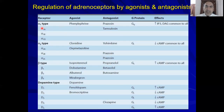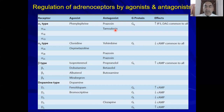Now let's discuss the regulation of these receptors by agonists and antagonists. For alpha-1: the agonist is phenylephrine and the antagonist is prazosin. There is also a selective alpha-1A antagonist commonly used for symptomatic treatment of benign prostatic hyperplasia (BPH). All alpha-1 receptors are GQ protein-coupled receptors. Activation of GQ activates the enzyme phospholipase C, which hydrolyzes PIP2 into diacylglycerol (DAG) and IP3.